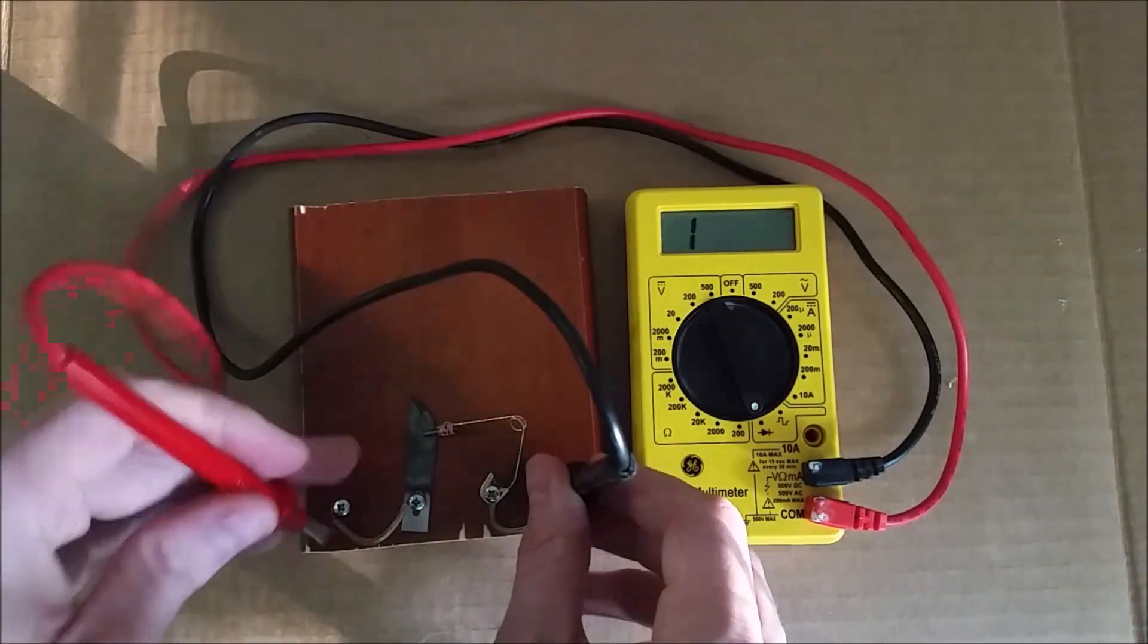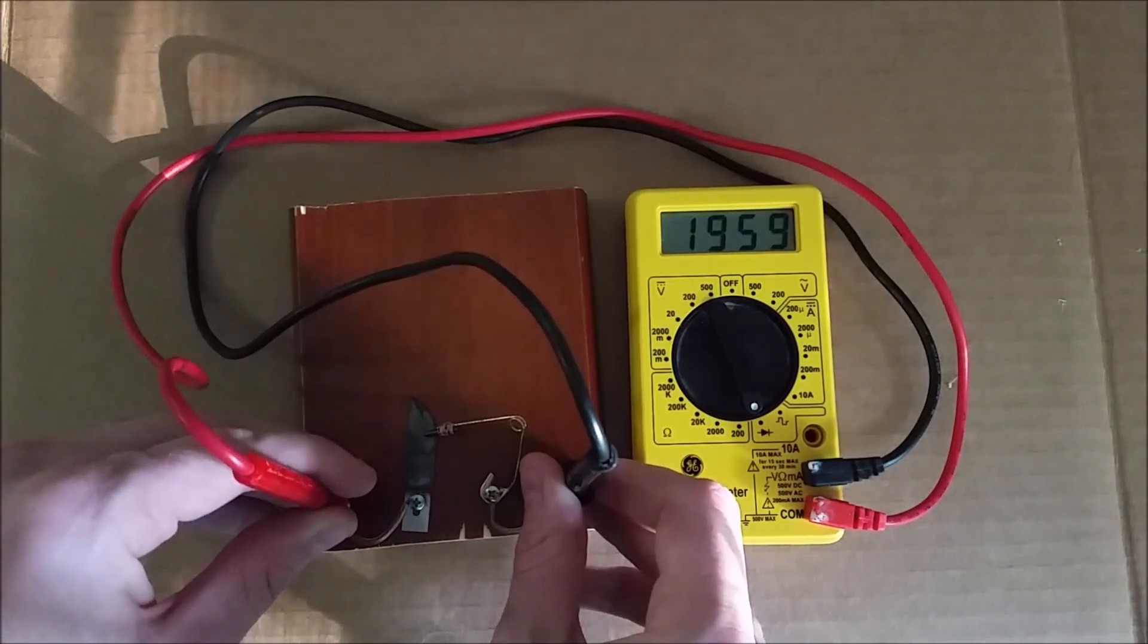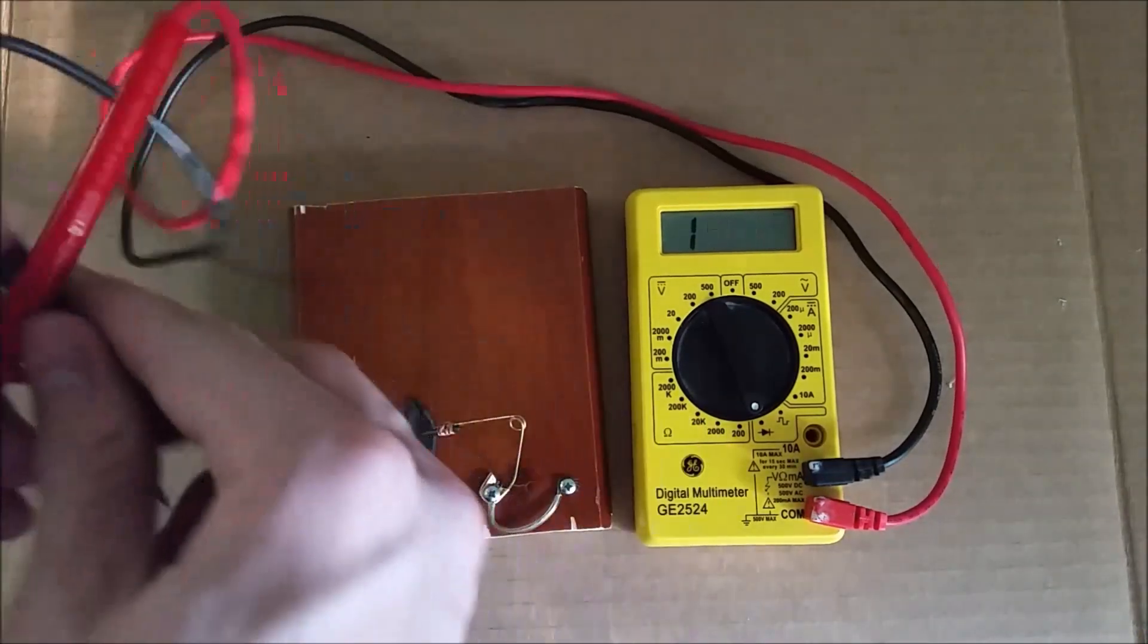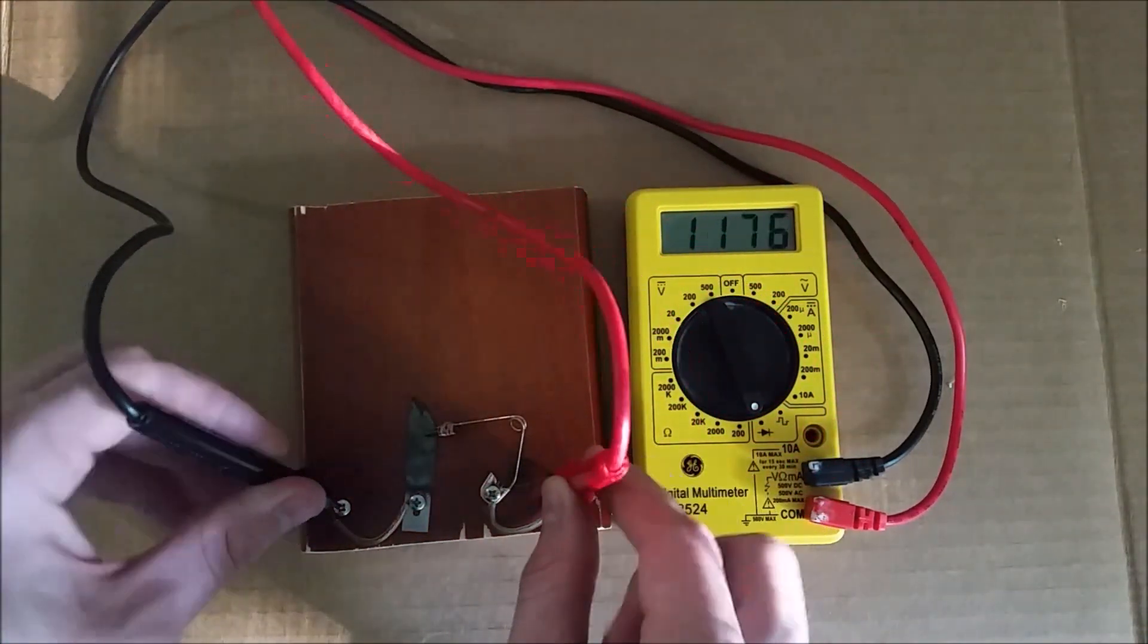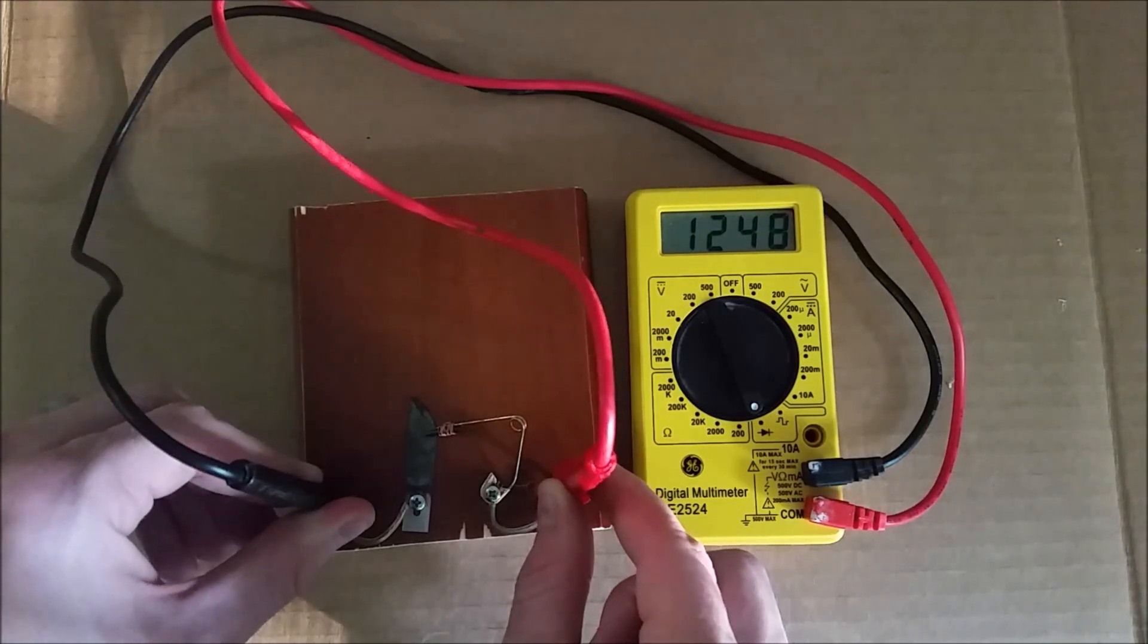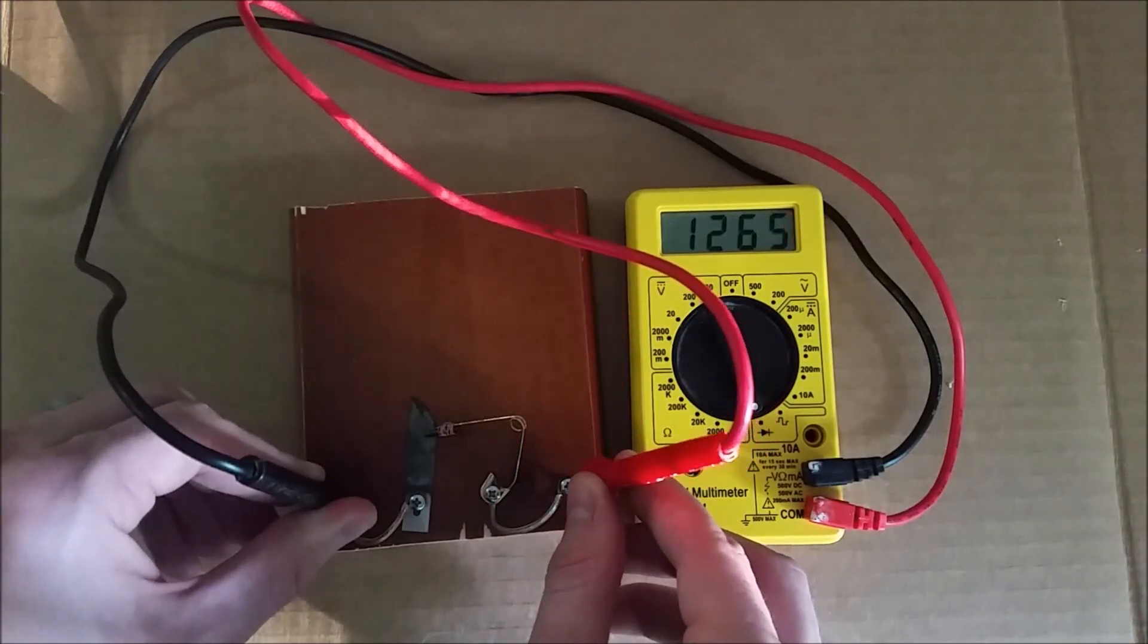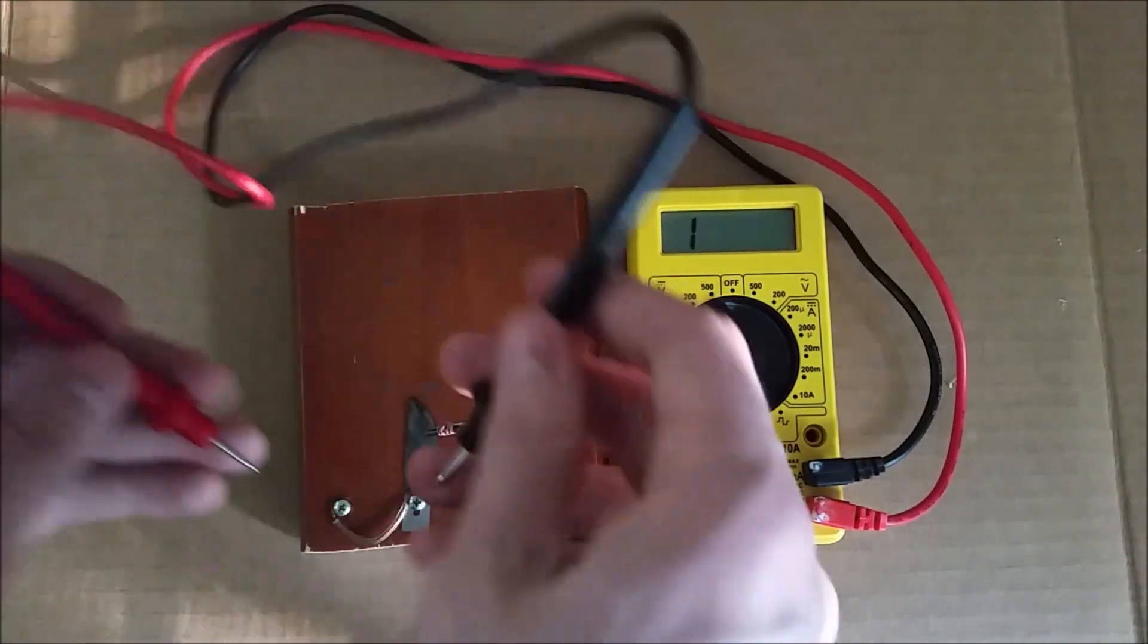So the resistance overall has gone up in both directions by quite a bit due to the layer of rust. However, the difference between one direction versus the other has increased. This diode seems to have a difference in resistance between the two directions of about 400 kilo ohms.